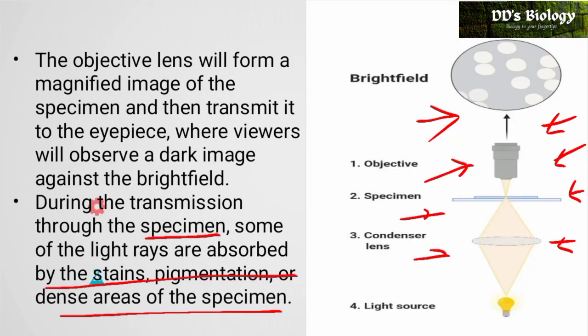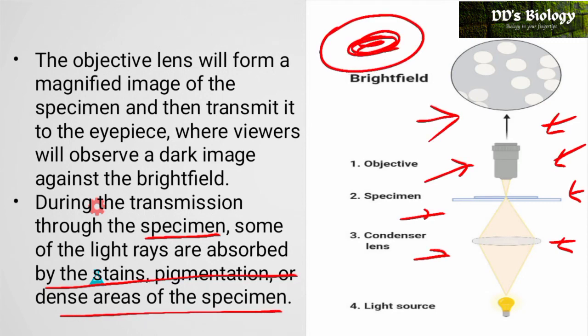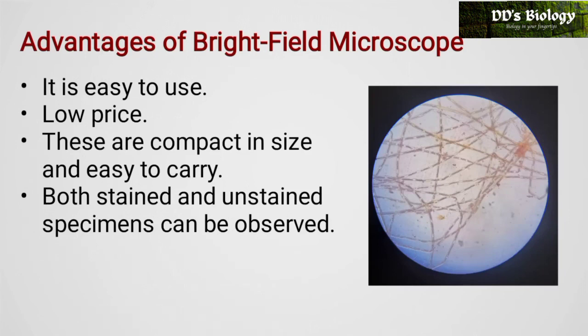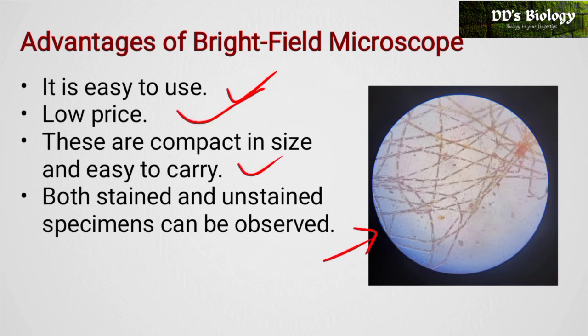The bright field microscope has a bright background and a darker specimen. Advantages include: it is easy to use, low price, compact in size, easy to carry, and both stained and unstained specimens can be observed.